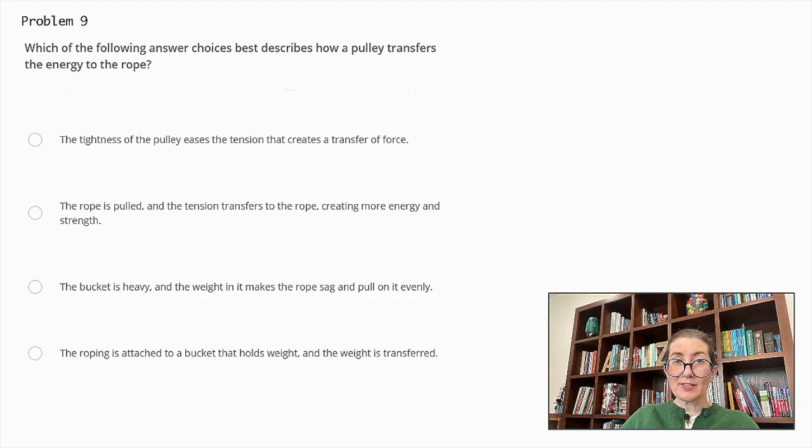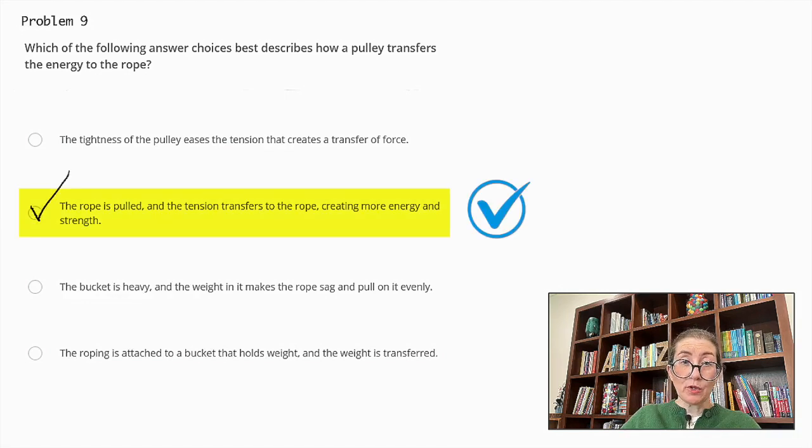Which of the following answer choices best describes how a pulley transfers the energy to the rope? The tightness of the pulley eases the tension that creates a transfer of force. The rope is pulled and the tension transfers to the rope creating more energy and strength. The bucket is heavy and the weight in it makes the rope sag and pull on it evenly. Or, the roping is attached to a bucket that holds weight and the weight is transferred. The correct answer is the rope is pulled and the tension transfers to the rope creating more energy and strength. When you pull the rope on a pulley, the tension in the rope changes direction and helps lift a load by transferring the applied force through the rope.